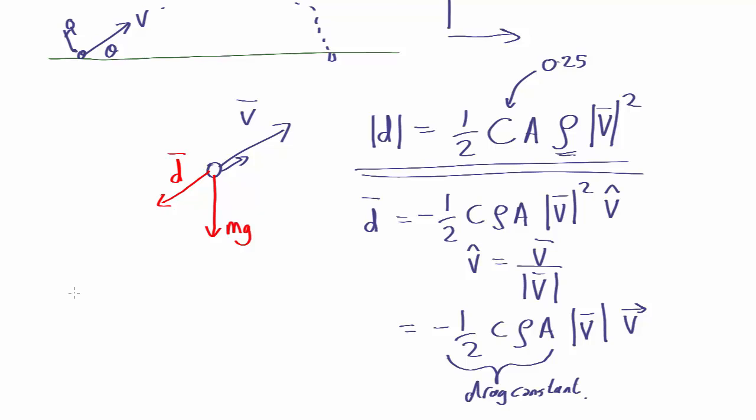So the total force is going to be minus half c rho a mod v times v, and then we're going to need to add gravity in.